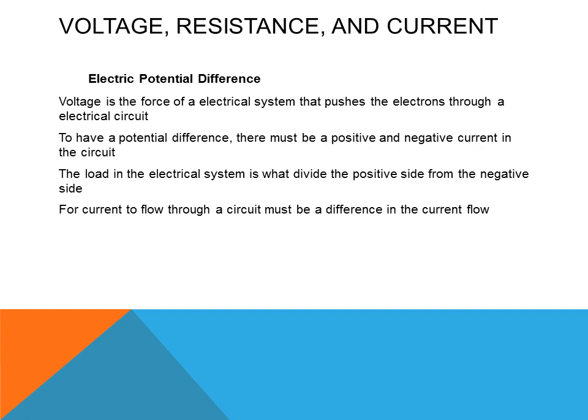What is voltage? Voltage can be called a potential difference. It is the force of the electrical system that pushes the electrons through an electrical circuit. Comparing to water flow measured in PSI, voltage is the measurement of the force pushing electrons through a wire. To have potential difference, there must be a positive and a negative in the circuit. The load divides the positive side from the negative side, creating the potential difference.